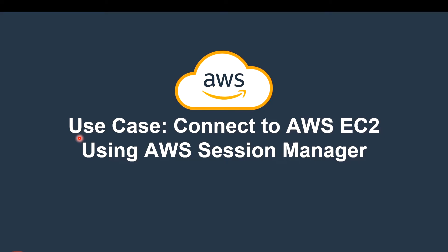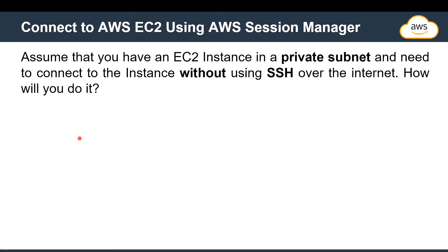Our use case for today: we want to connect to AWS EC2 instances using AWS Session Manager. Why do we need this? Assume you have an EC2 instance in a private subnet and you need to connect to it without using SSH or the internet. Normally we log in to EC2 using SSH with third-party tools like PuTTY, but what if you don't want to use any private key, public key, or SSH connection?